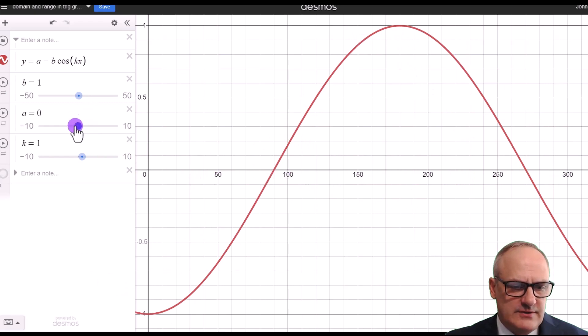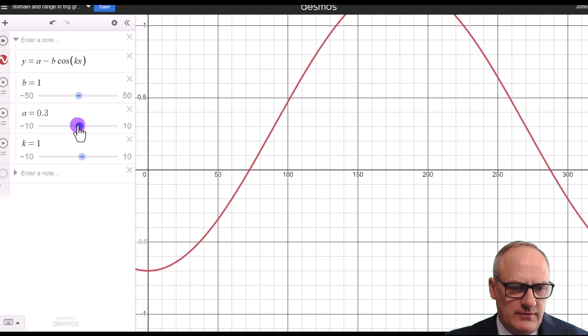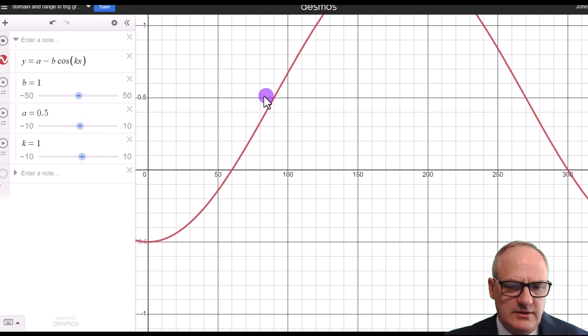So the axis that it goes up and down about is whatever our value of a is. So if we go to a is, let's make it 0.5 on this graph, you can see our new axis that it goes up and down around is 0.5.